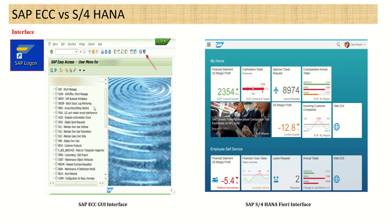In S4 HANA, you can still use the same SAP GUI feature. But along with this, there is a new interface known as SAP Fiori. SAP Fiori is a web-based interface, which means we can access it from any device — mobile, laptop, desktop, or any other device. Since it's web-based, you just need a standard URL. You can have a colorful screen, adjust tiles (each application is called a tile), customize your home screen, add graphics, and make the look and feel very attractive. This is the second major change in S4 HANA — the Fiori interface.